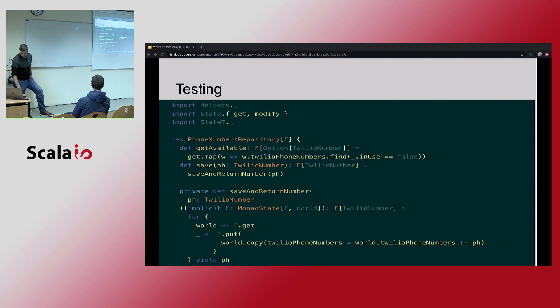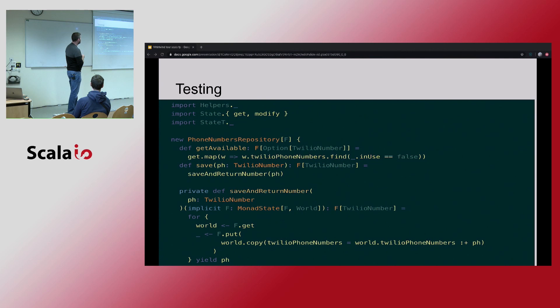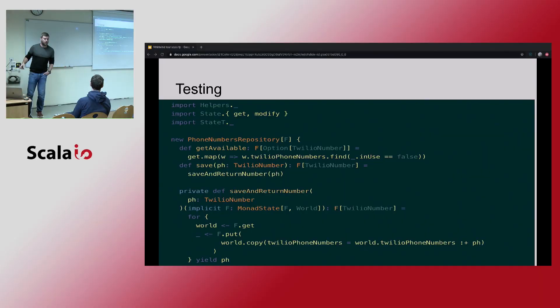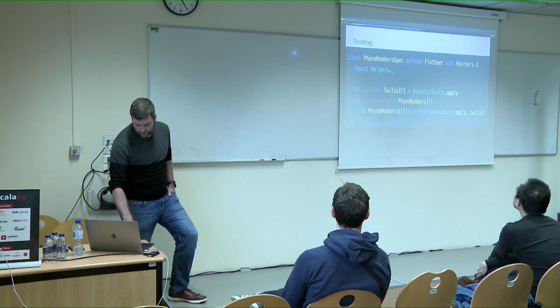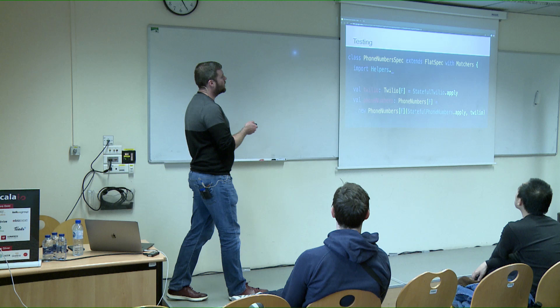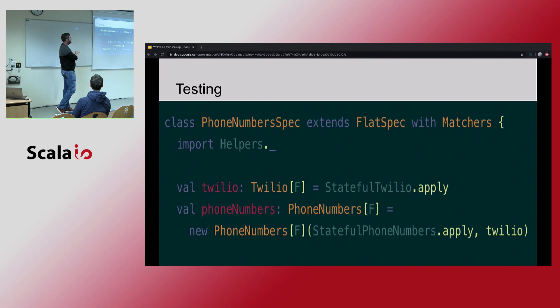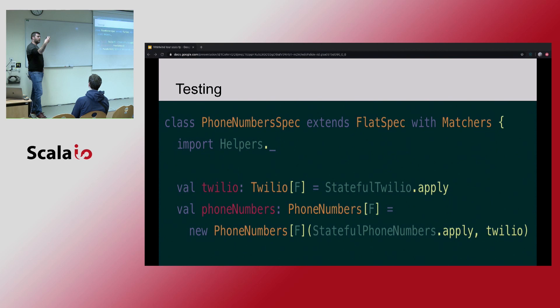The save method uses a helper to get the world out of the State object, copy the world with the new phone number added, put the new world back into the State object, and return it. We would also implement a stateful Twilio interface in the same way with the State object and the World, though we don't need to mimic Twilio's database in our World object.